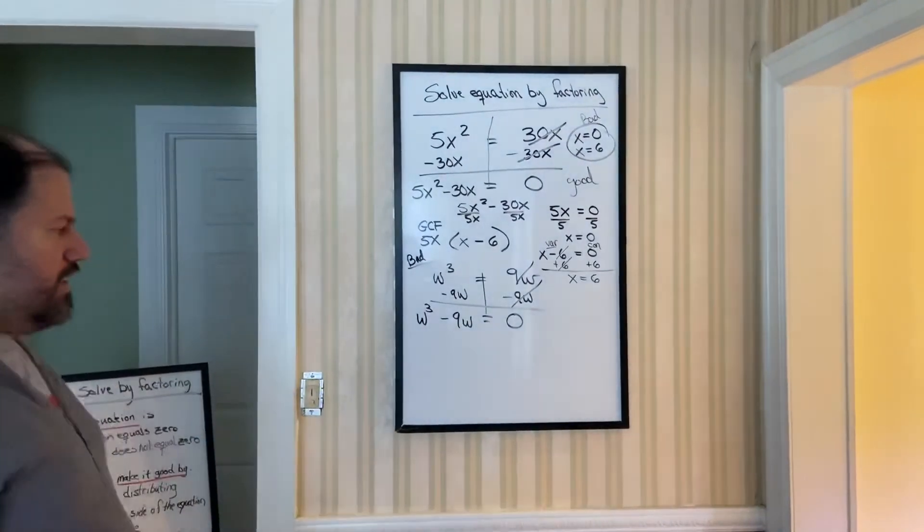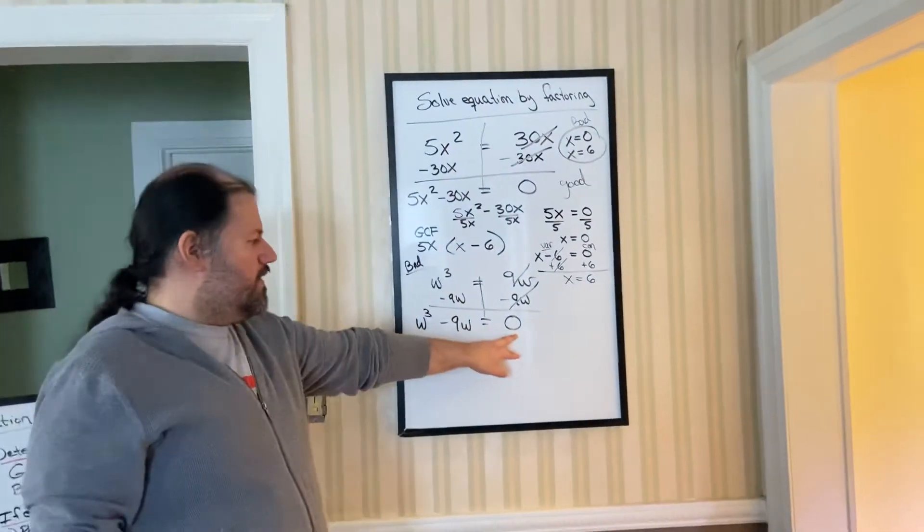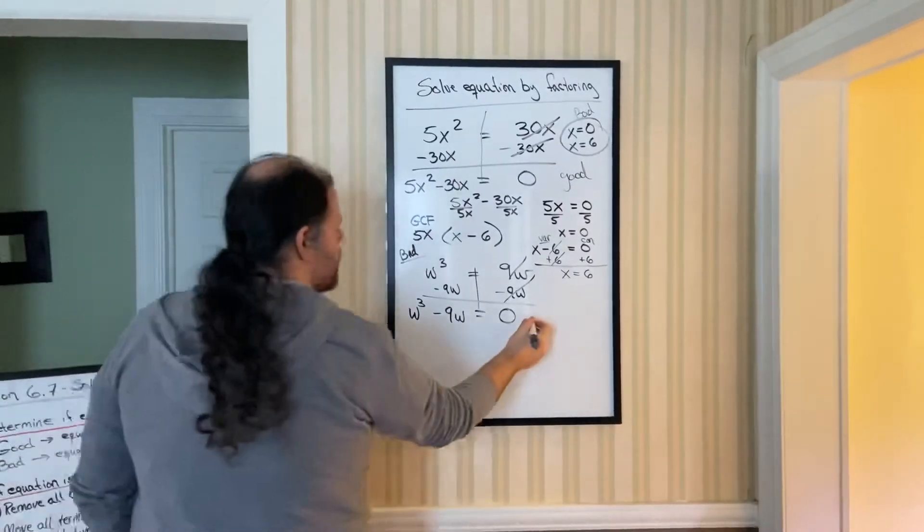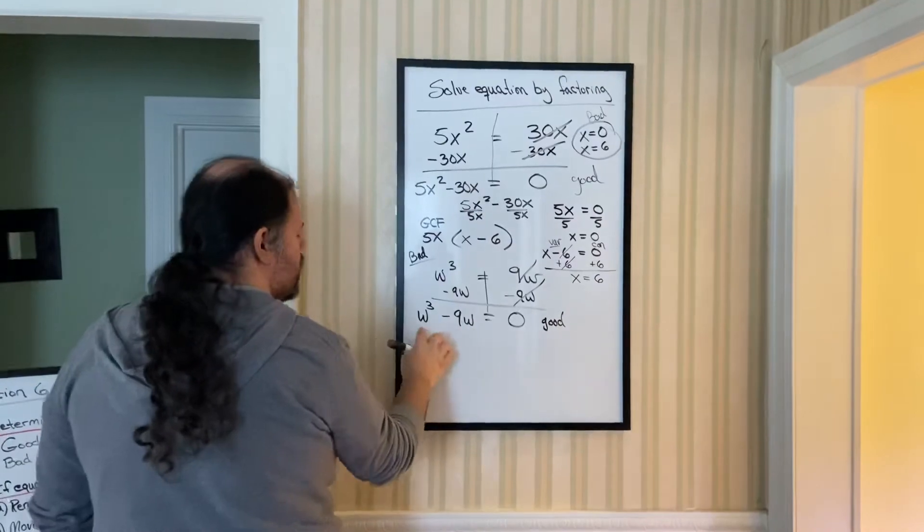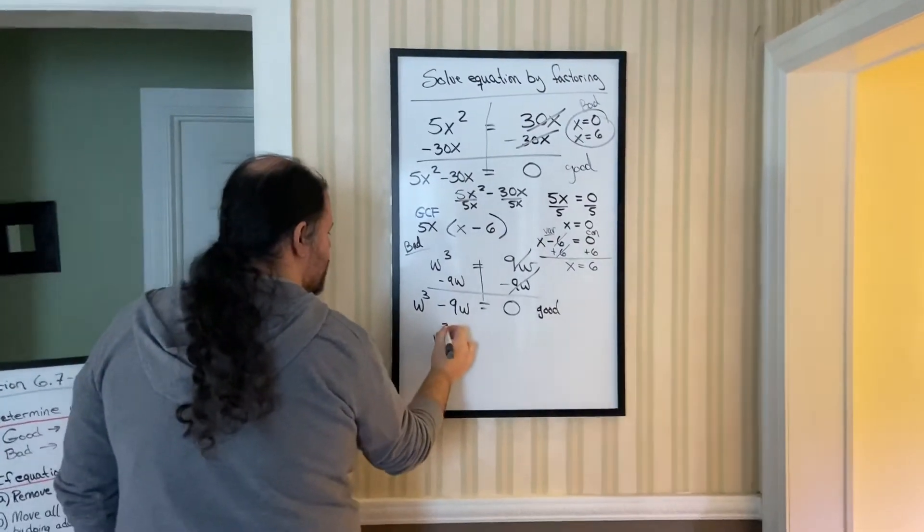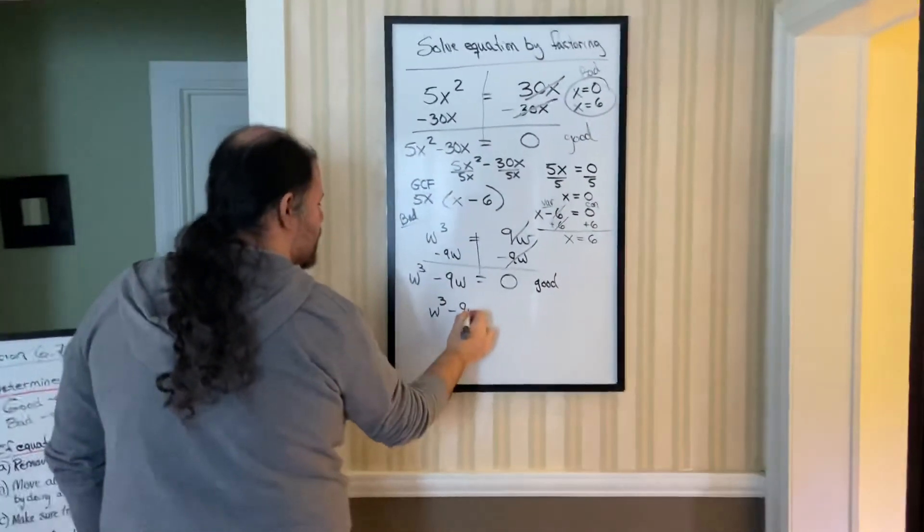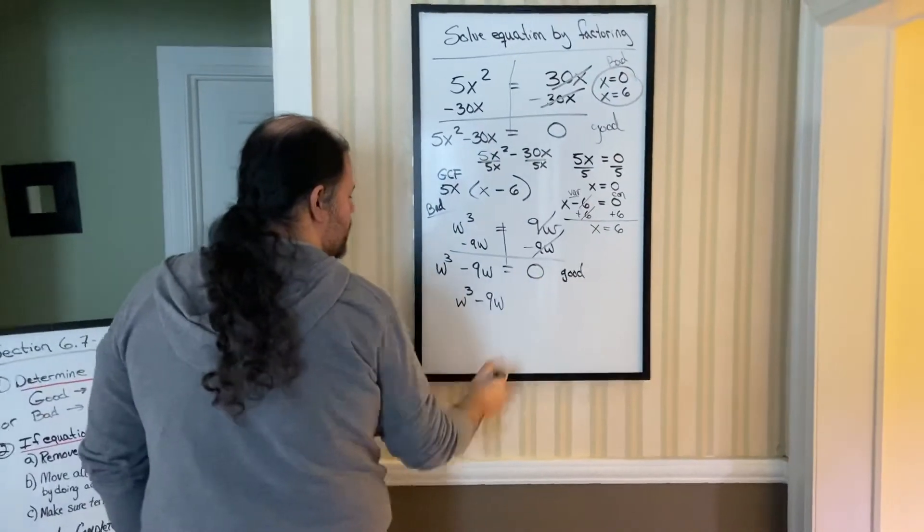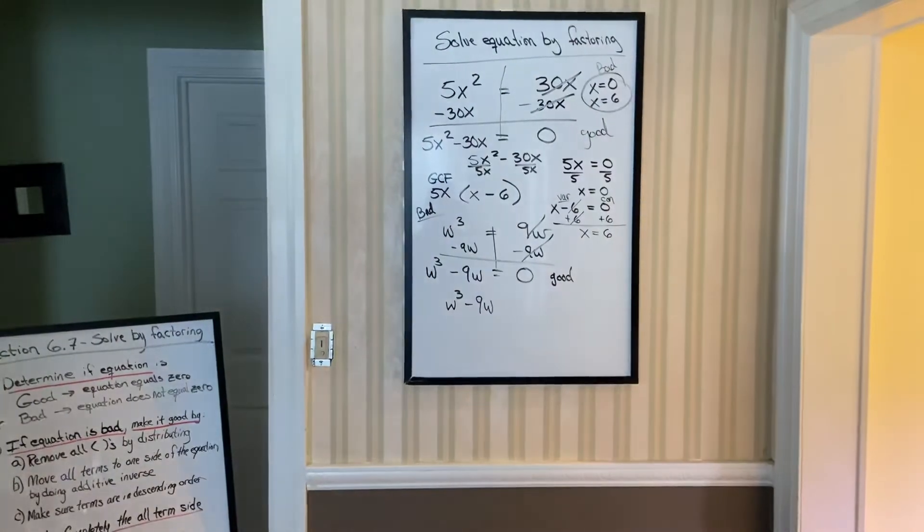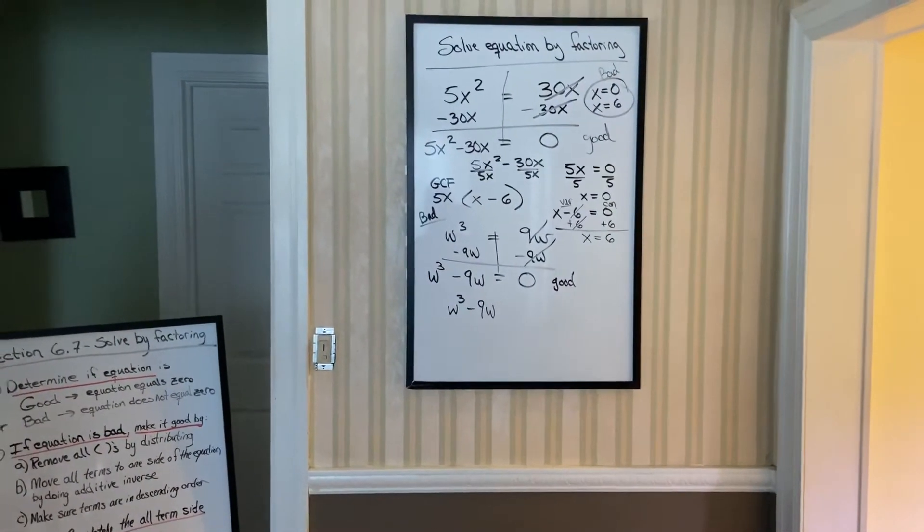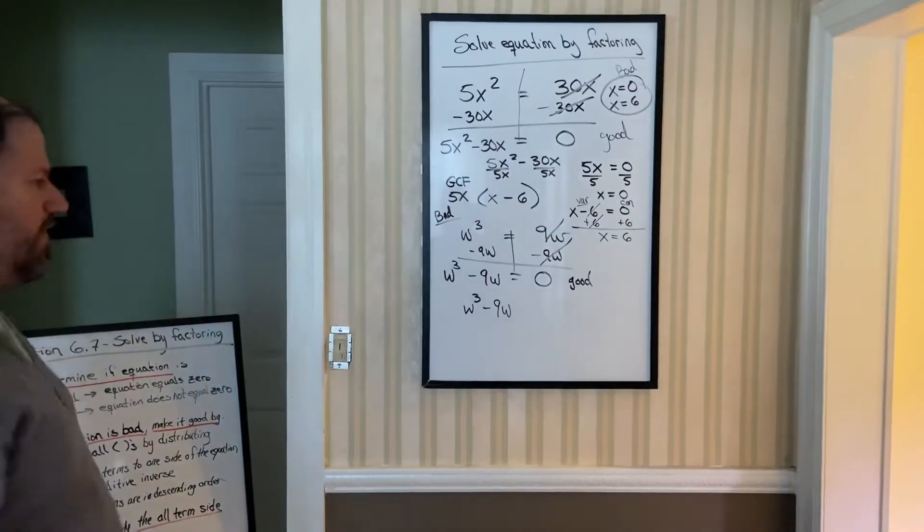Now notice, we got it good, because it equals 0. So once it's good, then I told you, focus on just the term sign. The sign that has all the numbers and letters. Ignore the equals 0 part. We're going to have to factor completely. Step 3. So again, see if there's a GCF. Hmm, I can take out a w.